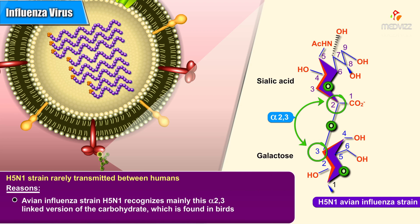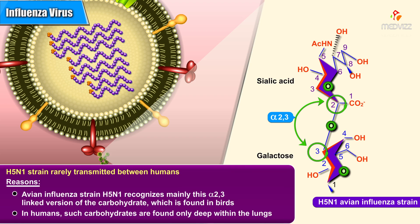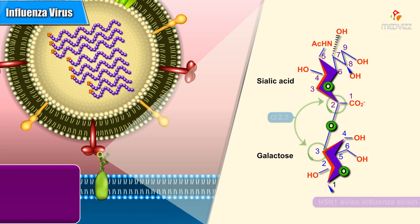The avian influenza strain H5N1 recognizes mainly this alpha-2-3 link version of the carbohydrate, which is found in birds. In humans, such carbohydrates are found only deep within the lungs, which may explain why the H5N1 strain, though deadly, is rarely transmitted between humans.